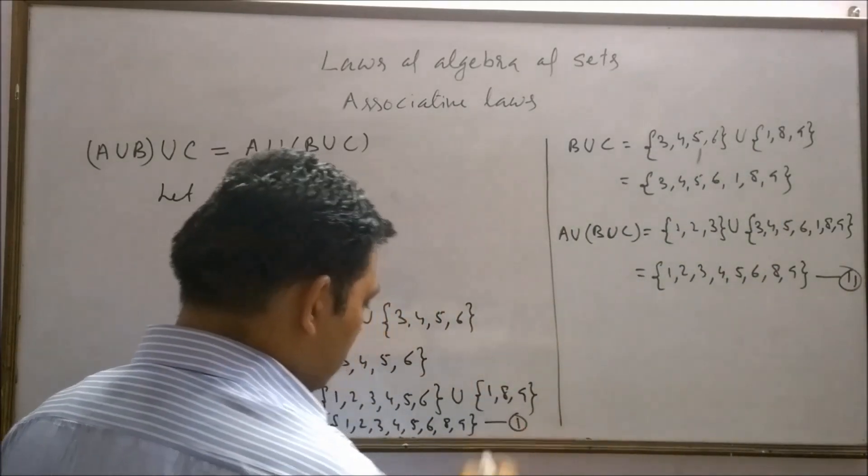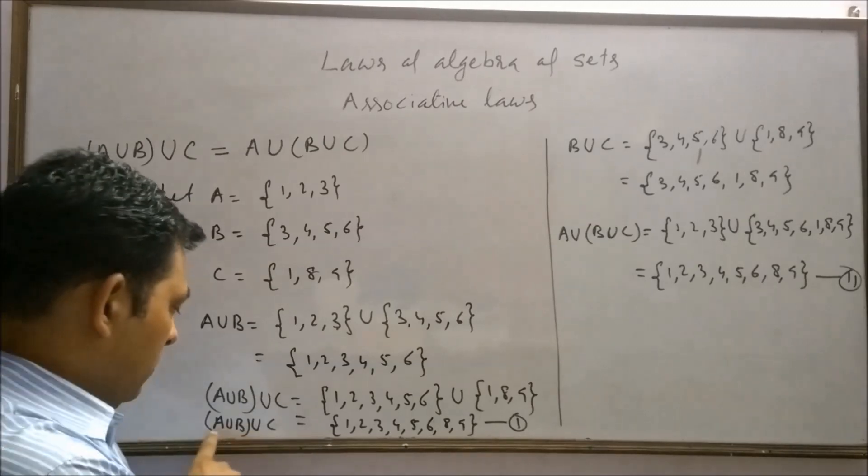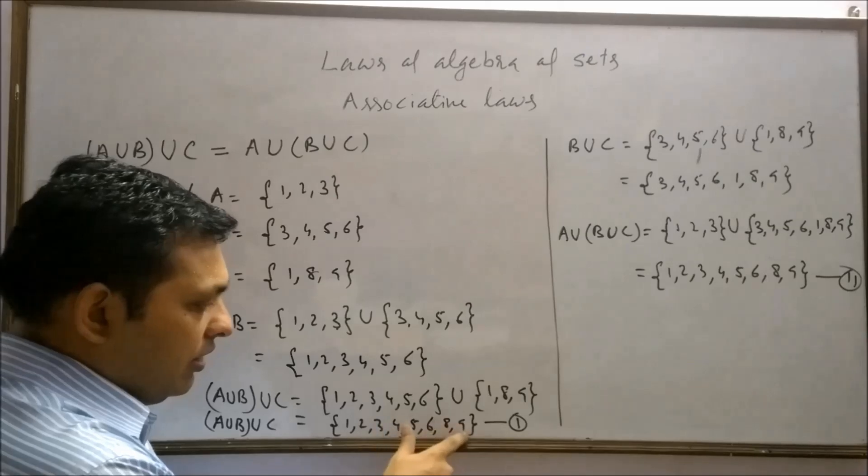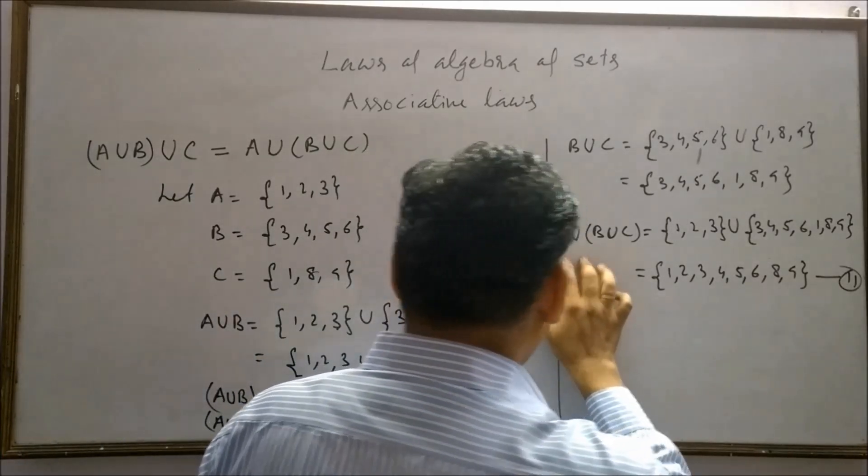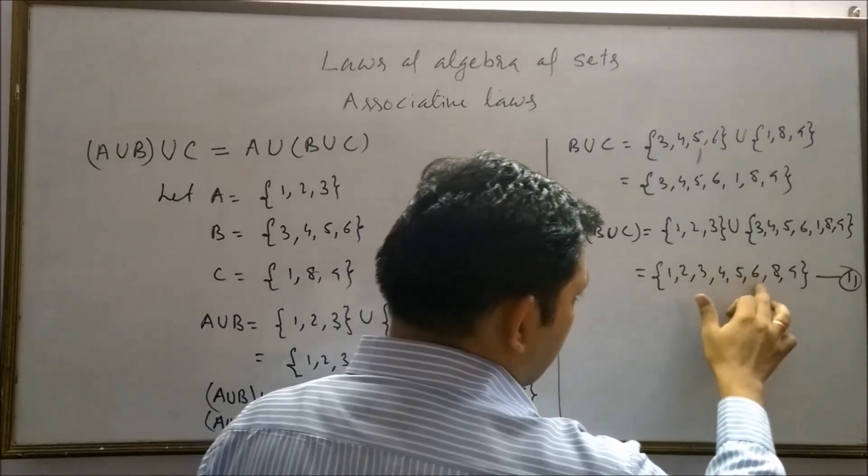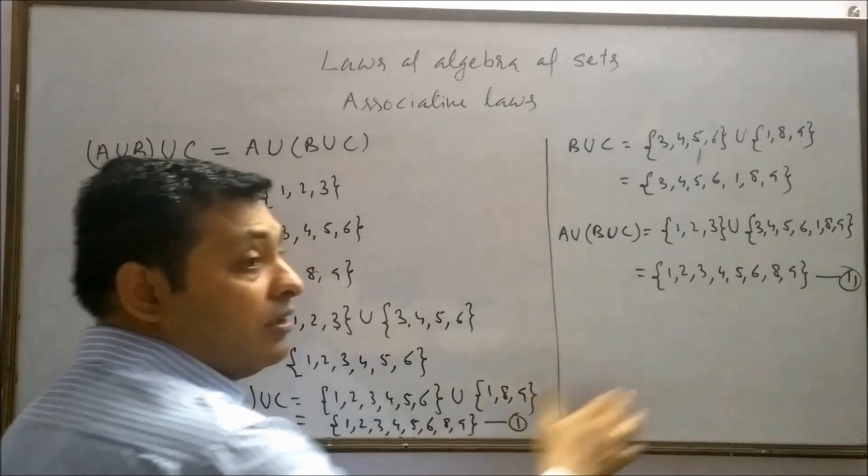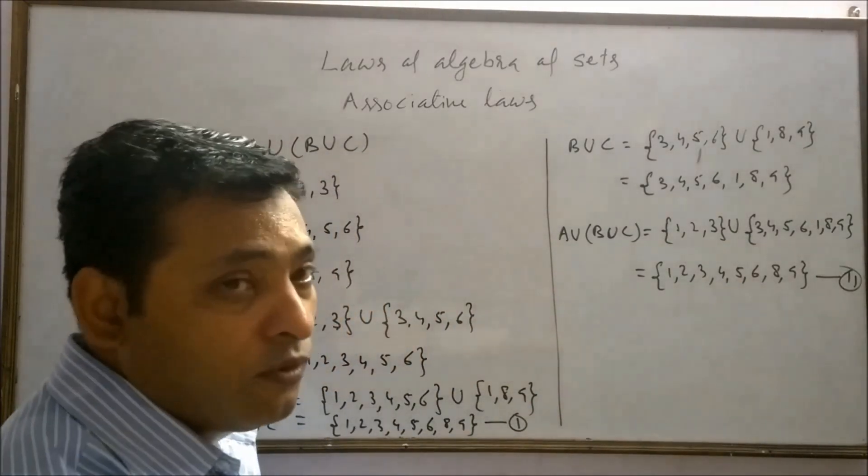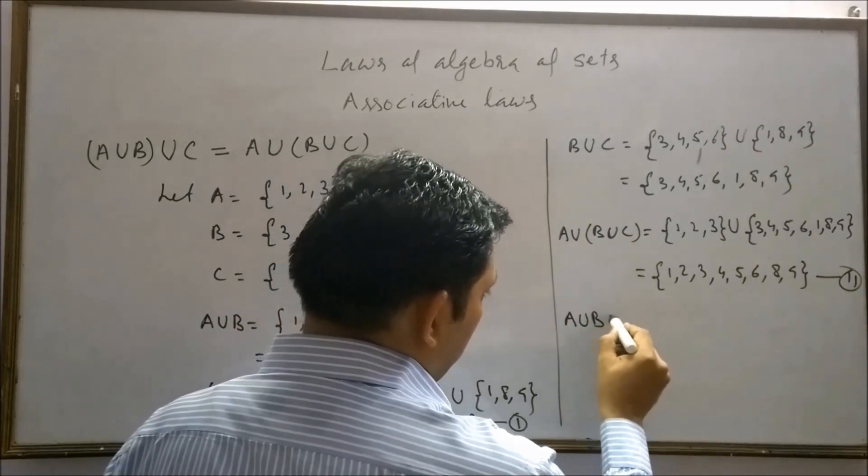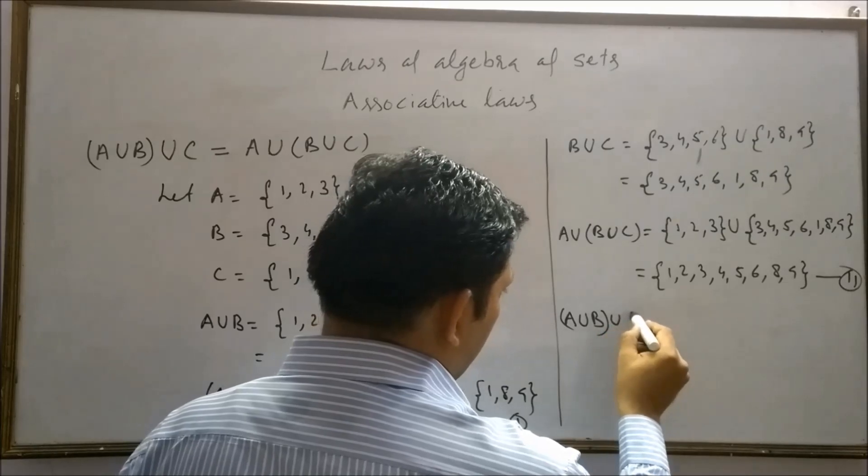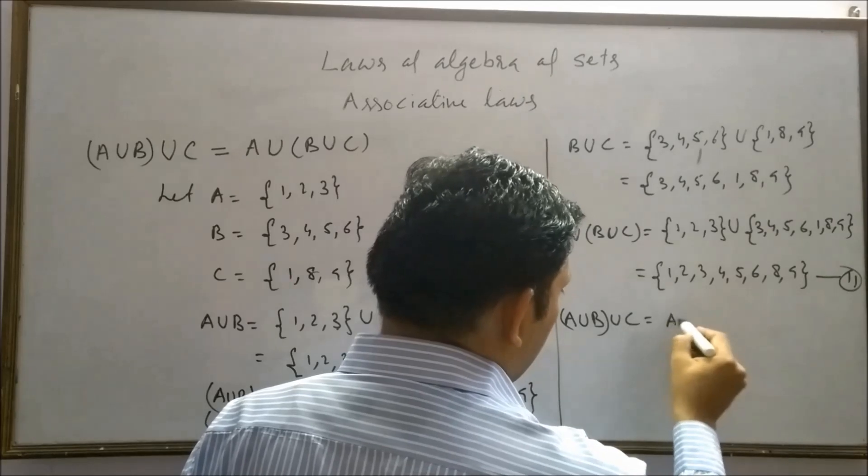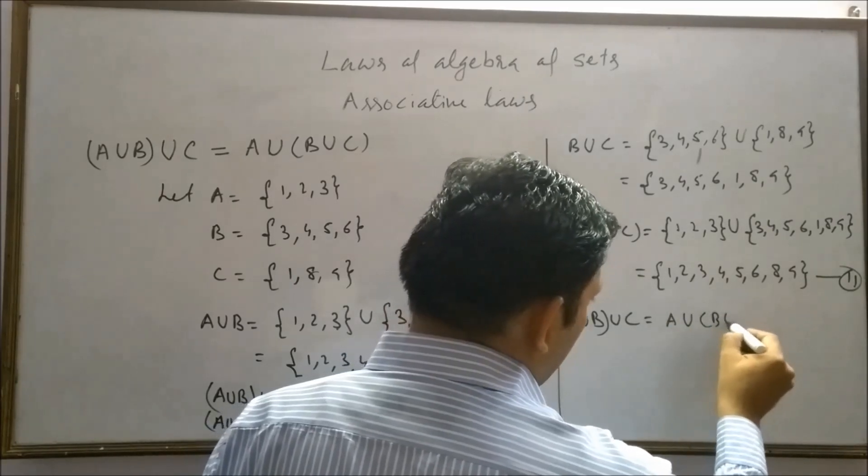This is our first result. A union B union C contain 1, 2, 3, 4, 5, 6, 8, 9. A union B union C contain 1, 2, 3, 4, 5, 6, 8, 9. It means the result 1 and 2 are same. Therefore, we conclude that A union B associated with union C is equal to A union B union C.